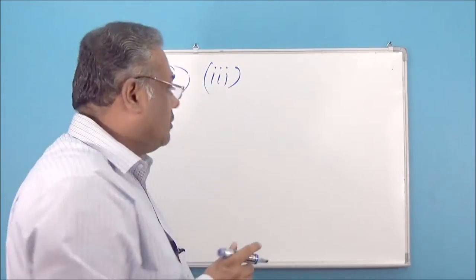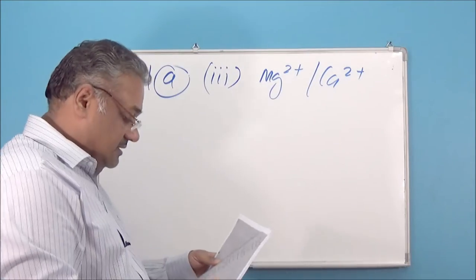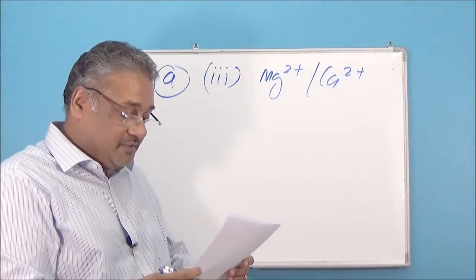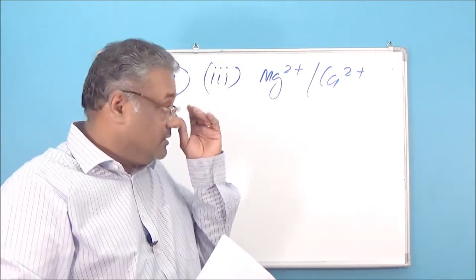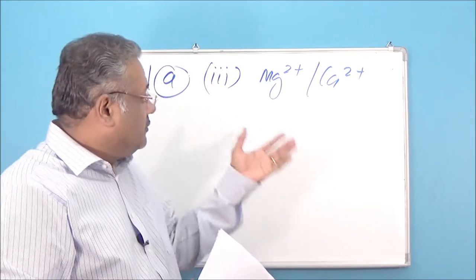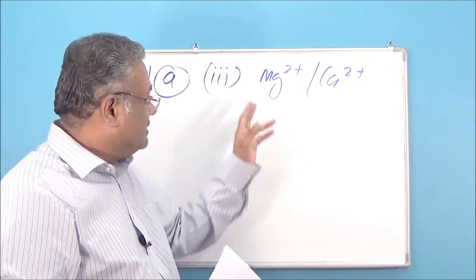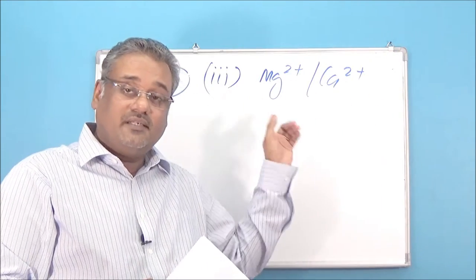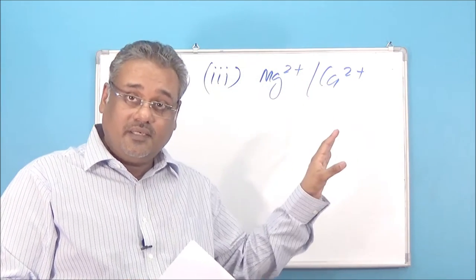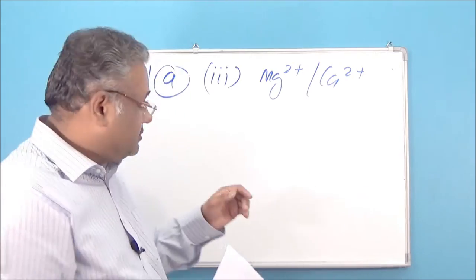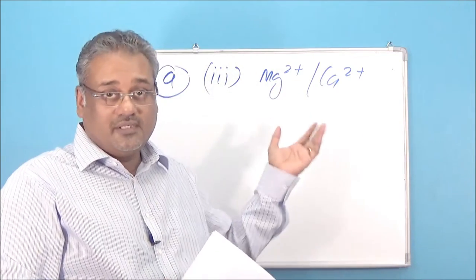The third question asks you to compare the hydration enthalpies of the magnesium ion and the calcium ion, and suggest a reason why the hydration enthalpy of magnesium is more than that of calcium. The hydration enthalpy depends on the size of the ions, or charge density. If you look at your data booklet, both ions have the same charge, but the magnesium ion is smaller in size and therefore has a higher charge density. That's why its hydration enthalpy is higher — the answer is the small ionic radius, or equivalently, the high charge density of Mg²⁺.